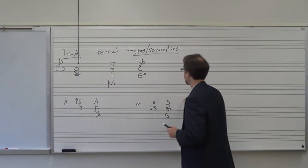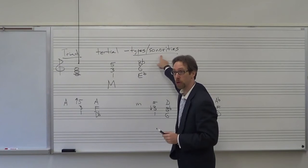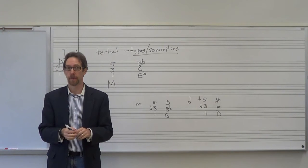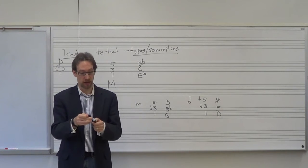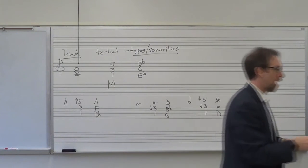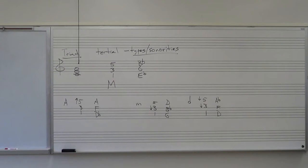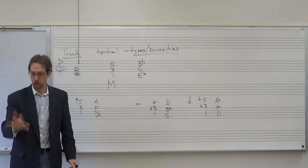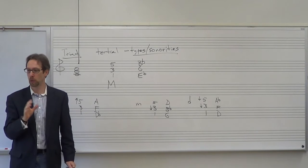Augmented, major, minor, diminished — these are our sonorities, or types, of triads. We now have a formula so we can figure out the notes in all circumstances. Let's use our ears, because it's always good to tie theory to what it sounds like. Your major triad — we'll do this all in the key of C. [major played] We'll jump to the augmented. [augmented played] We'll go to minor. [minor played] And finally, diminished. [diminished played] You want to be able to intellectually understand those different triads, and also identify them by ear.